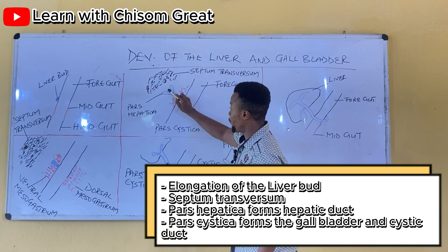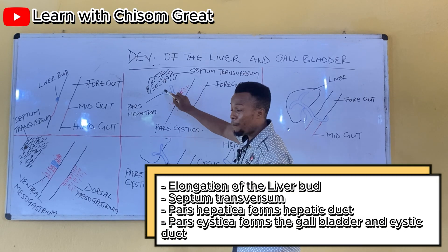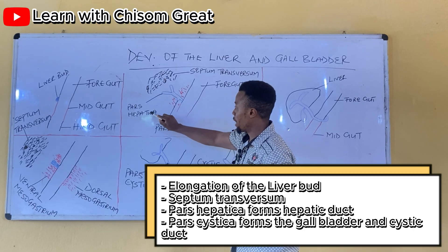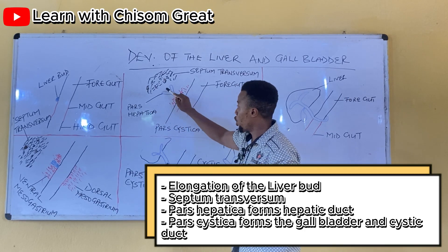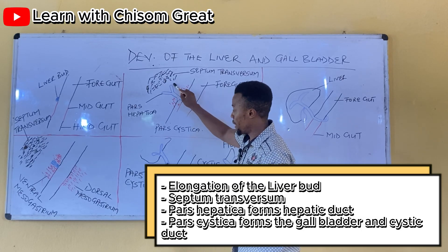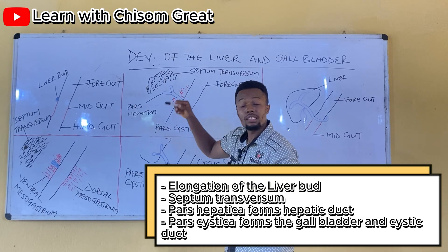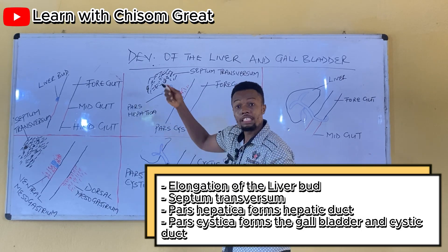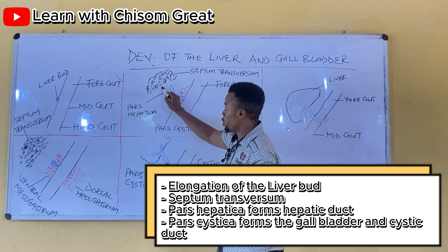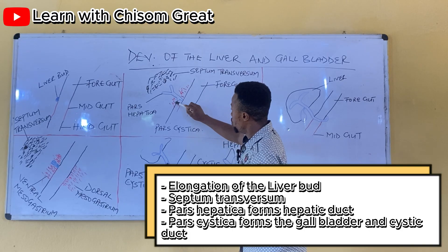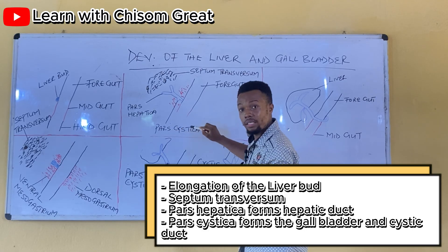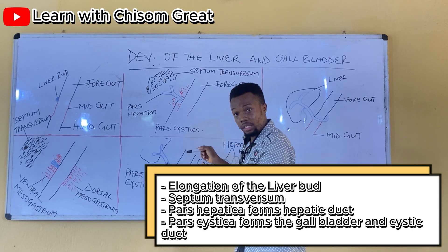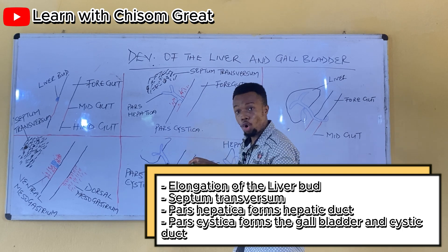It divides into two. The upper division is known as the pars hepatica. It is the pars hepatica that gives rise to the hepatic duct. The lower division is known as the pars cystica, which gives rise to the cystic duct and the gallbladder.